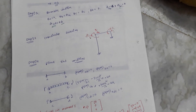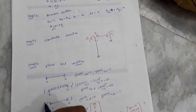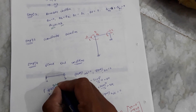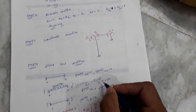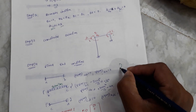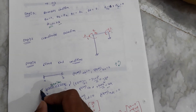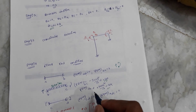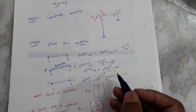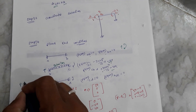This is a displacement method, so our major assumption is fixed end moments. Member A-to-B has no loading, so fixed end moments are zero. Member B-to-C has a uniformly distributed load of 30 kilo Newton per meter, giving fixed end moments of plus 40 and minus 40 using wL squared over 12. Our sign convention is clockwise rotation positive from the right. Member C-to-D has no loading, so fixed end moment is zero.